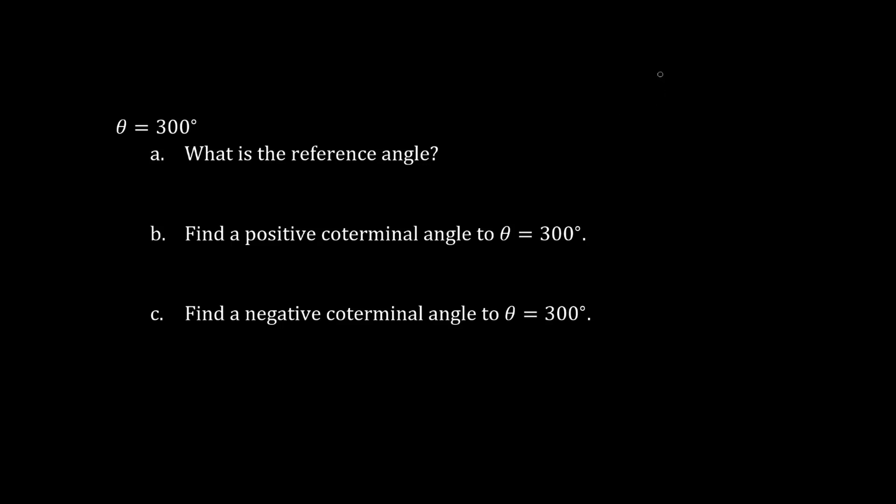Theta equals 300 degrees. We start from the right. This is 90, 180, 270. And 30 more is around here. So this here is theta. It's obtuse. It's 300 degrees.